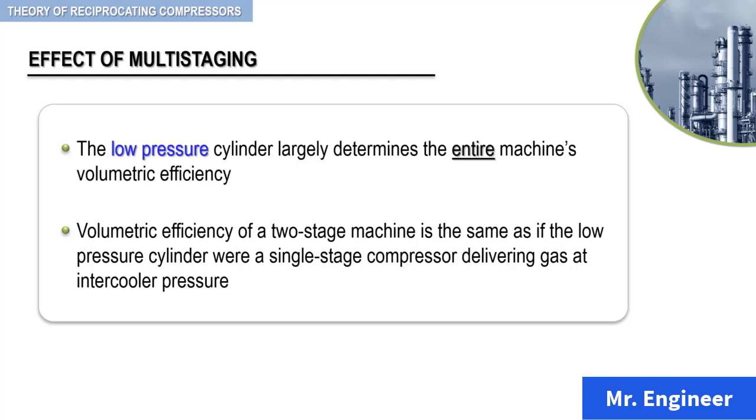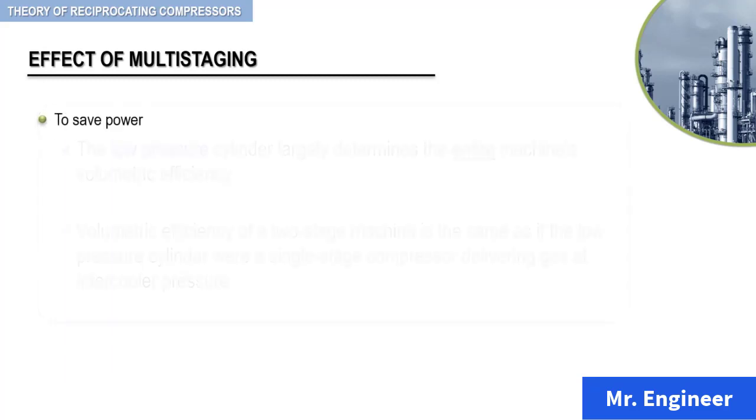For reciprocating compressors, multistaging is used to save power, to limit gas discharge temperature, and to limit pressure differential. Because there is intercooling between stages, there is a reduction in the maximum gas discharge temperature.